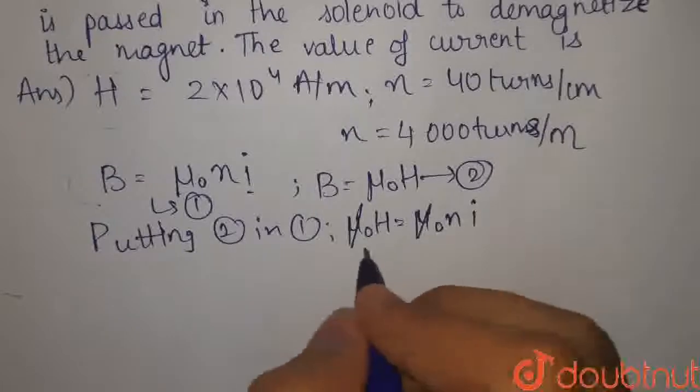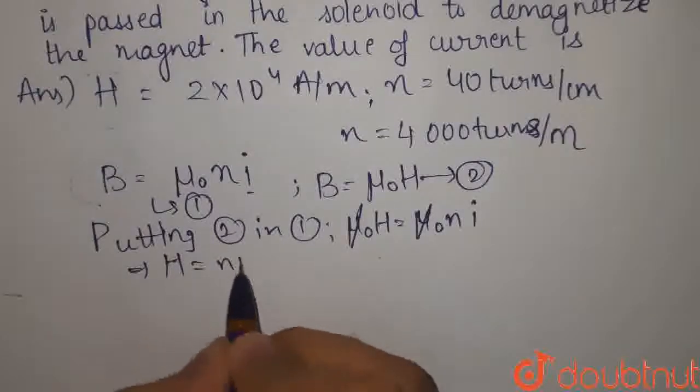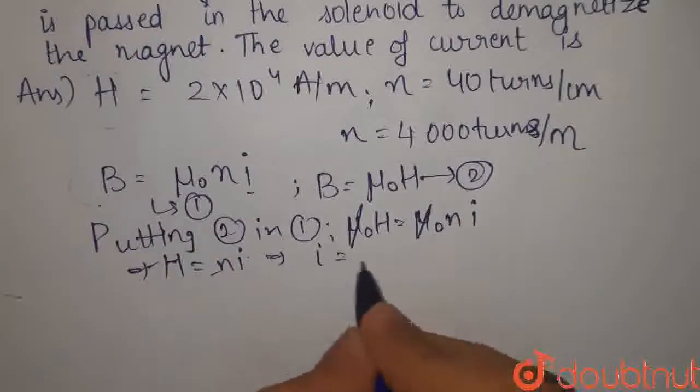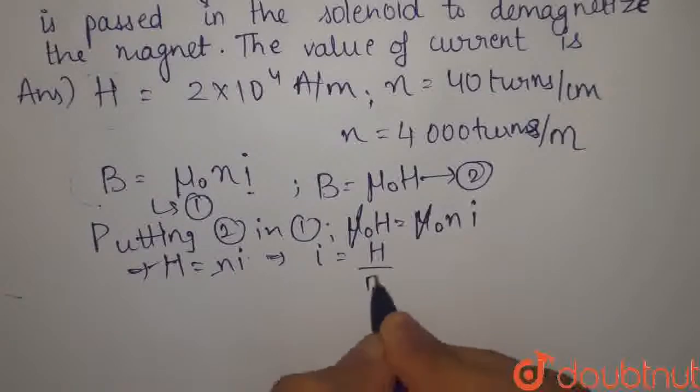तो यहाँ से mu 0, mu 0 तो cancel. तो बचा क्या हमारा है, H is equals to ni. अब हमें current ढूंढना है, H की value है, N की value है. तो अब तो simple हो गया, current I कितना हुआ, H upon N.